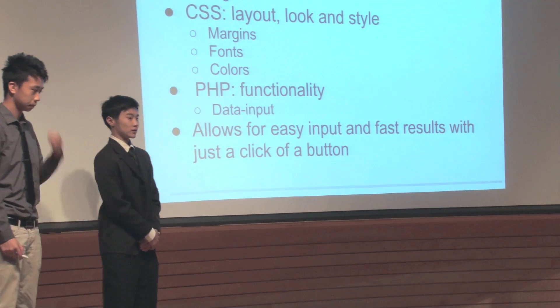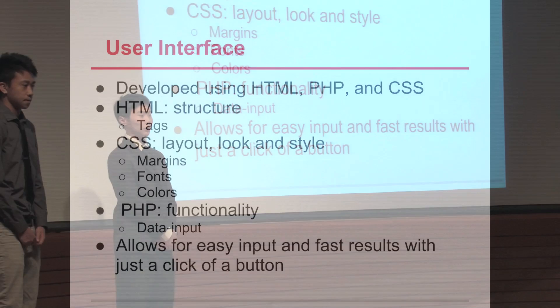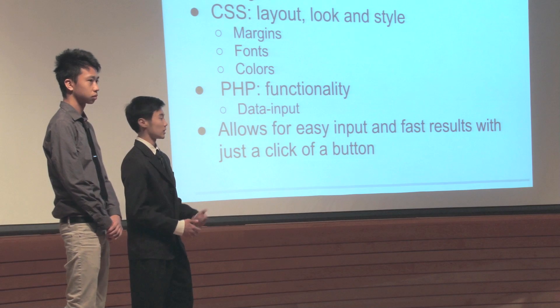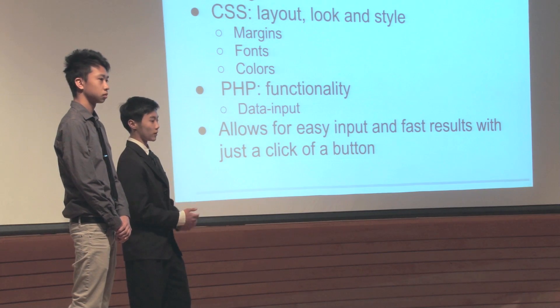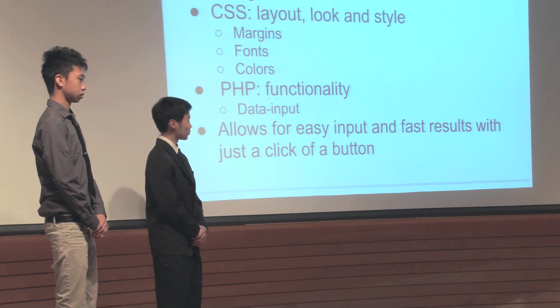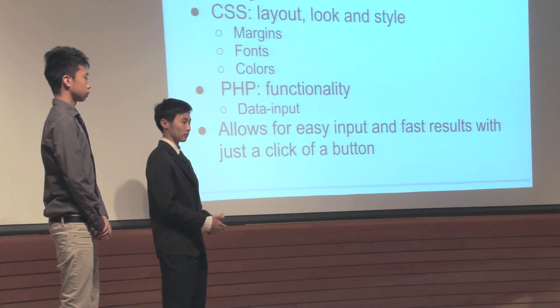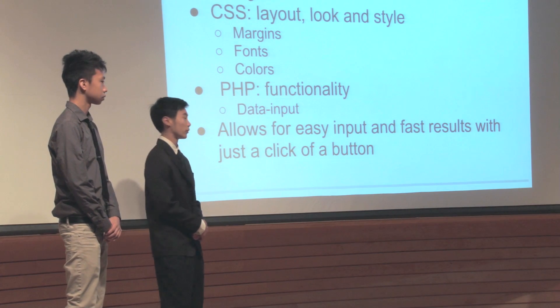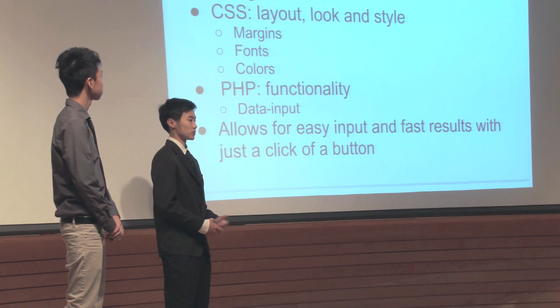So the user interface that Don was just talking about was developed using HTML, PHP, and CSS. For the overall structure and formatting of the website, we used HTML. And that's basically a language of tags. And this takes care of all the text, all the location, and formatting of the website. For the visual aspects of the website, we used CSS. And this takes care of the layout, the look, and style of it. So stuff like margins, fonts, and colors, all the visual aspects of the website, are taken care of by CSS. For the functionality of the website, where the user inputs the data and clicks a button to get their results, we use the language of PHP. And all these languages combine together to offer easy input and fast results, which are just a few clicks of a button.